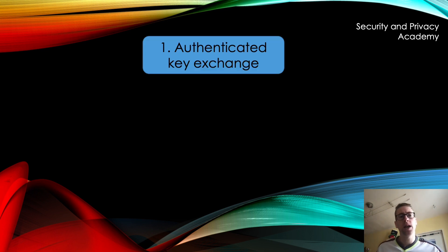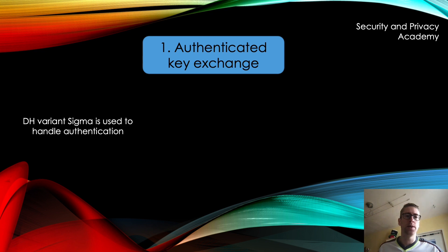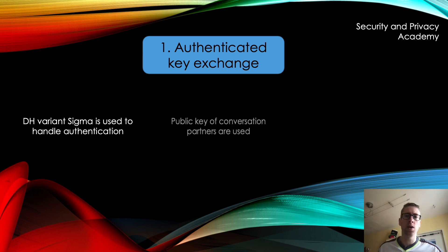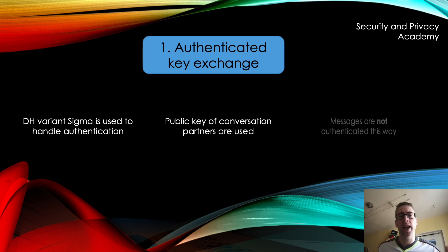OTR uses a Diffie-Hellman variant called Sigma to handle authentication. As you may know, Diffie-Hellman key exchange does not handle authentication, so man-in-the-middle attacks are possible. That's why Sigma is used in OTR, and the authentication is done via the long-term public keys of the conversation partners. It's important that only the communication partners are authenticated this way, not the messages themselves.